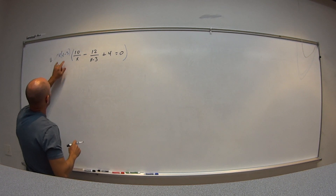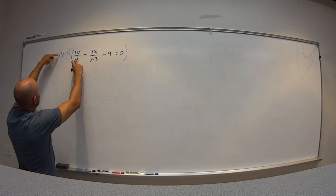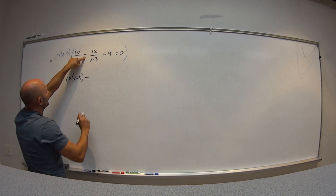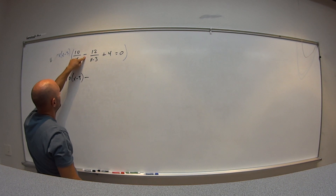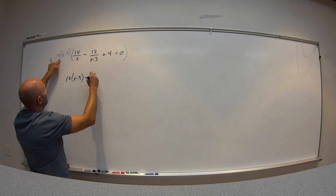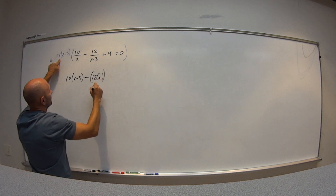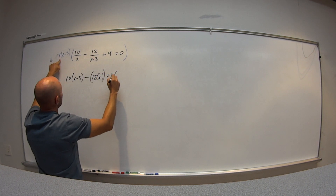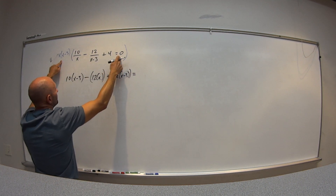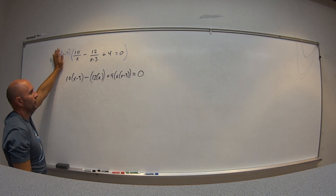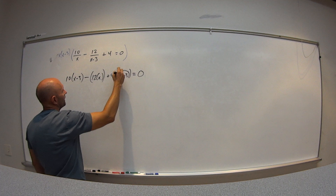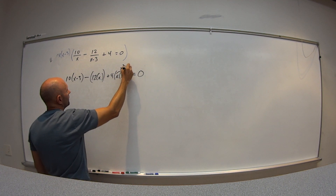That LCD gets multiplied by every single piece. When I multiply it by the first piece, the x cancels, and I'm left with 10 times x minus 3. We have to be careful not to lose track of that minus sign. Then x minus 3 cancels, leaving 12 times x. And then plus 4 times x times x minus 3, which distributes to x squared minus 3x, equals 0.